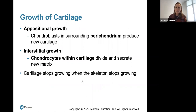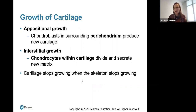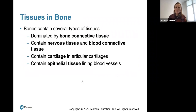The growth of cartilage can happen appositionally or interstitially. Appositional growth is when chondroblasts in the surrounding perichondrium produce new growth from the outside. Interstitial growth happens within the cartilage, where chondrocytes divide and secrete new matrix. Cartilage will stop growing when your skeleton stops growing.